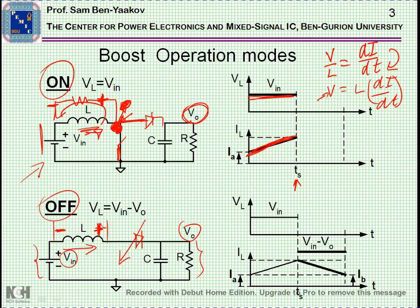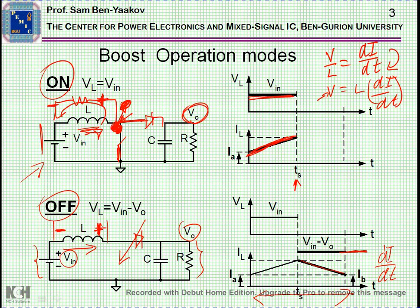And consequently, the voltage is negative, and therefore the dI/dT is negative. The current is now going down. This will be one cycle — it will go on and on. In steady state, this current should be equal to this current, assuming we are in steady state position.